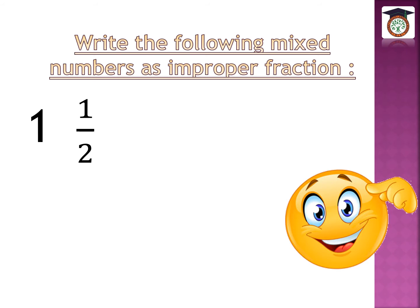First, we multiply the denominator by the whole number: 2 times 1 equals 2. Then we add the numerator: plus 1 equals 3. So the answer is 3 over 2. The denominator stays the same — it will be 2.